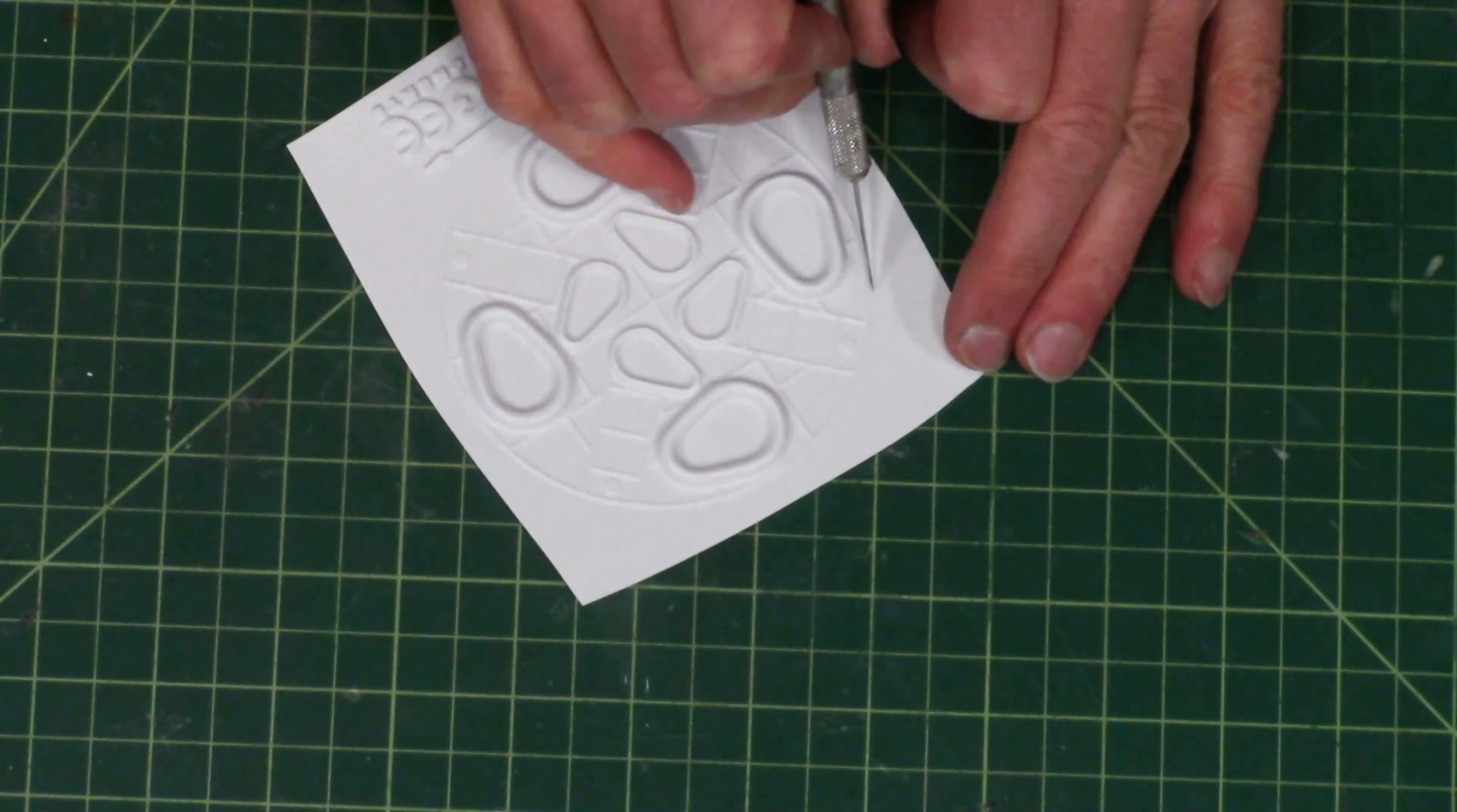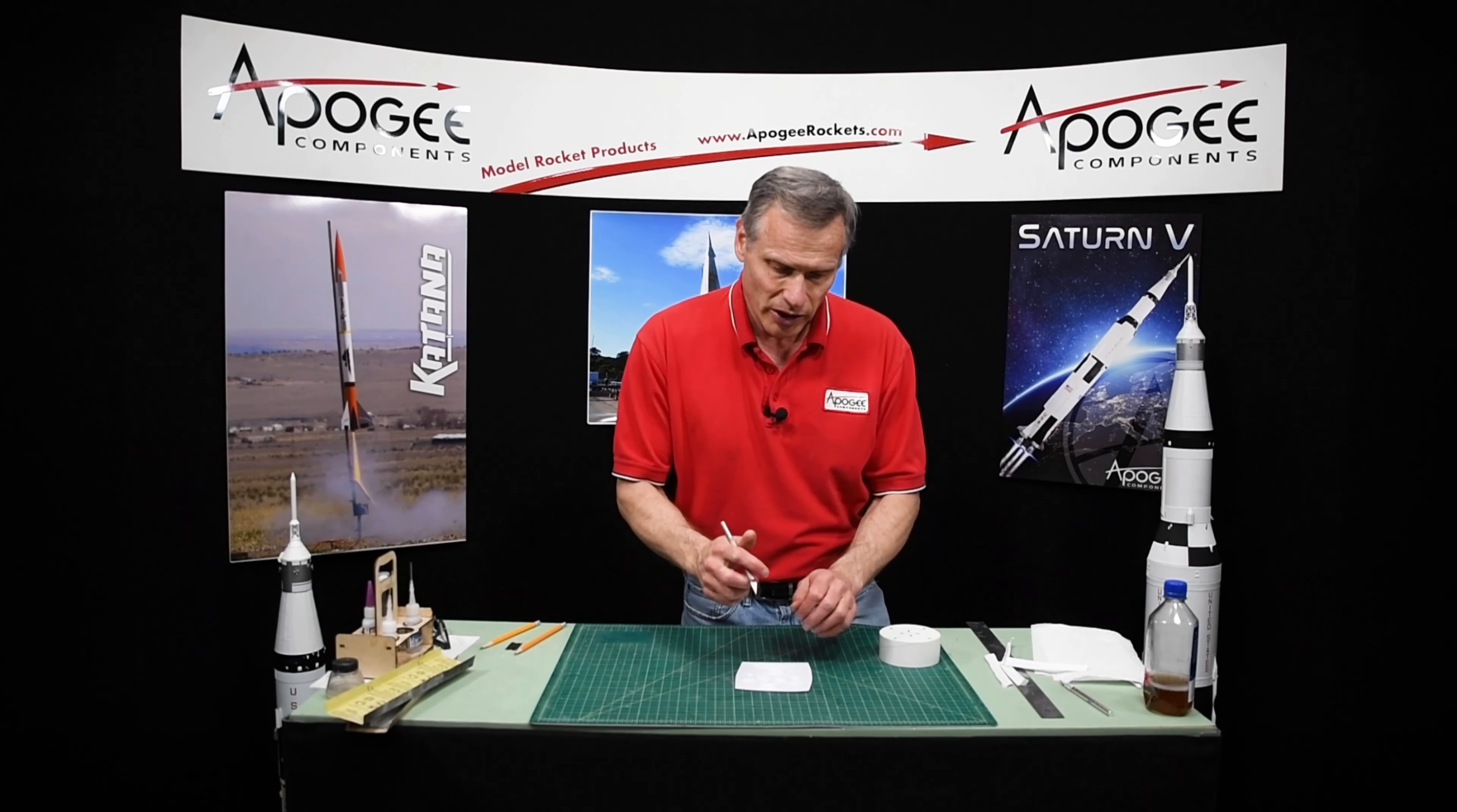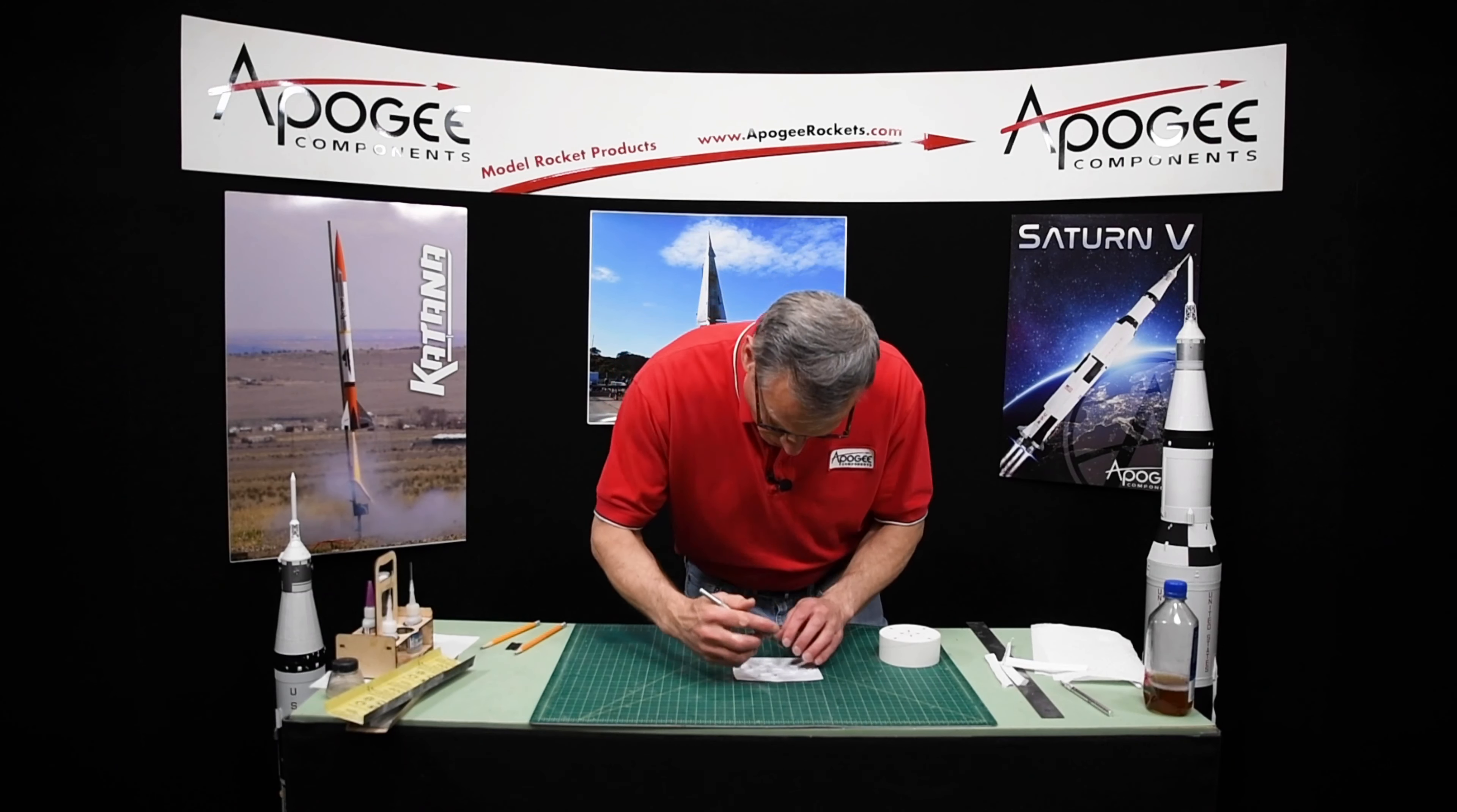We want to cut around the outside perimeter where the raised edge is. That will fit exactly on here. So stay on the outside, cut slowly. Try not to go all the way through. We'll bend it back like we did before and that will snap it so that we can get it out of the sheet. Pause here while I cut.